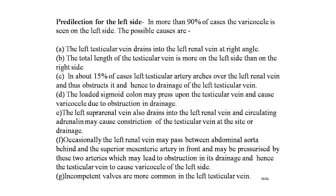Predilection for the left side: in more than 90% of cases, varicocele is seen on the left side. The left testicular vein drains into the left renal vein at a right angle; the total length of the testicular vein is greater on the left. In about 15% of cases, the left testicular artery arches over the left renal vein and obstructs it. The loaded sigmoid colon may press upon the testicular vein. The left suprarenal vein also drains into the left renal vein, and circulating adrenaline may constrict the testicular vein at the drainage site. Occasionally, the left renal vein passes between the abdominal aorta and superior mesenteric artery, which may compress it and obstruct testicular vein drainage causing left-sided varicocele. Incompetent valves are more common in the left testicular vein.